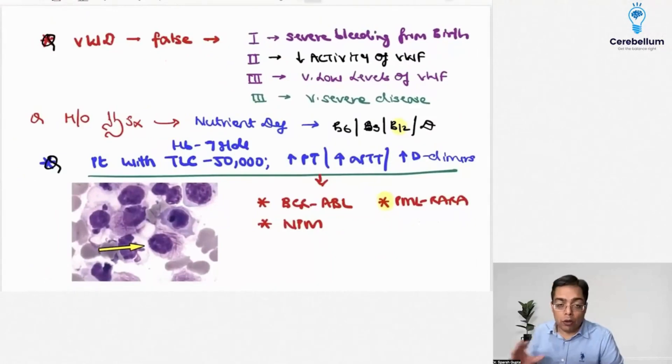Hematology was covered extensively in Paper 1, and we got a lot of questions in Paper 2 as well. We got a question on the most common inheritable cause of coagulation defects, that's going to be Von Willebrand disease, and the question was not about a true statement but about a false statement.